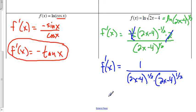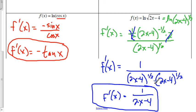And when I multiply those together, we add exponents. 1 half plus 1 half is 1, so we just get 1 all over 2x minus 4. Okay, and that's it for part 2.